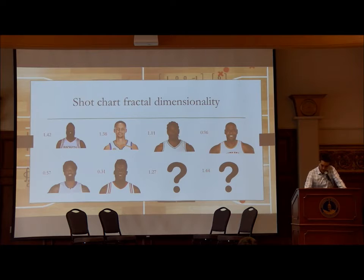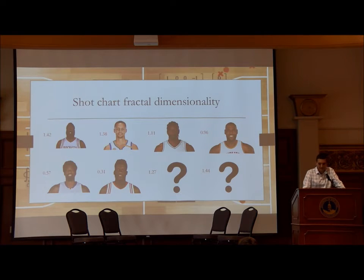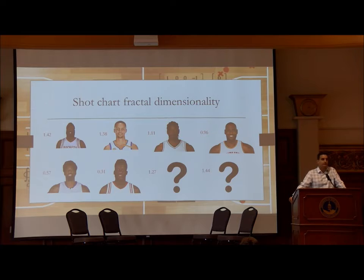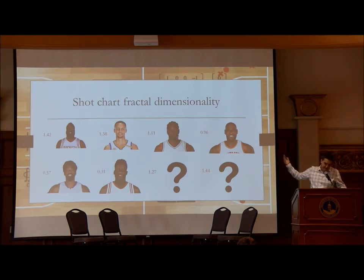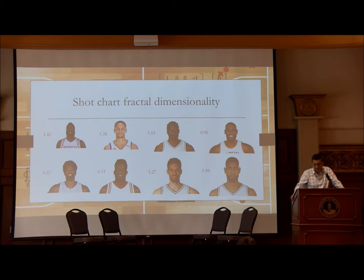Here are examples of fractal dimensionality for different players. James Harden has 1.4, quite high. Steph Curry is similarly high. Kawhi Leonard and LeBron James are around one. As expected, DeAndre Jordan and Clint Capella have much lower values — they attack the ring. There are also two players with fairly large fractal dimensionality of 1.27 and 1.44. You might guess these are players somewhere between Curry and Leonard, but it turns out they are Pau Gasol and Tim Duncan — these are from a couple of years back.